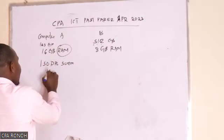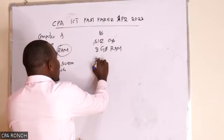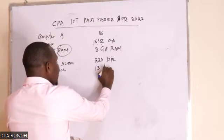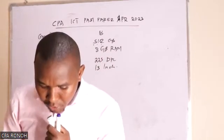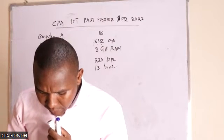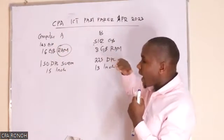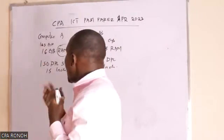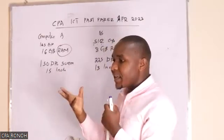Computer A has a 150 DPI screen at 15 inches, and Computer B has a 225 DPI screen at 13 inches. The question was asking you to give the strengths of Computer A and the strengths of Computer B.